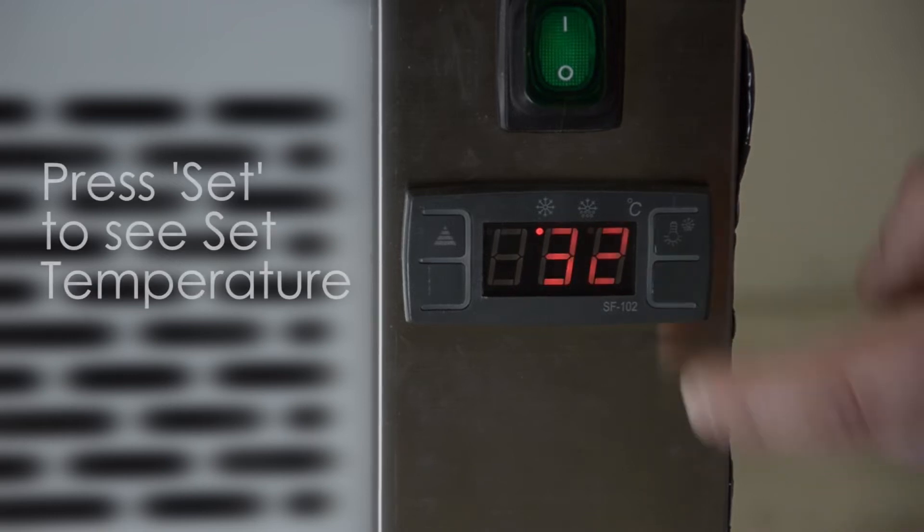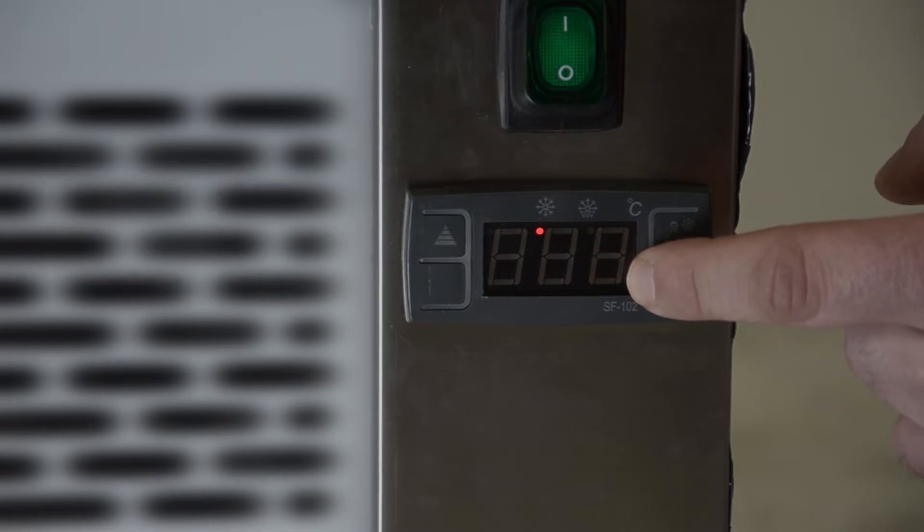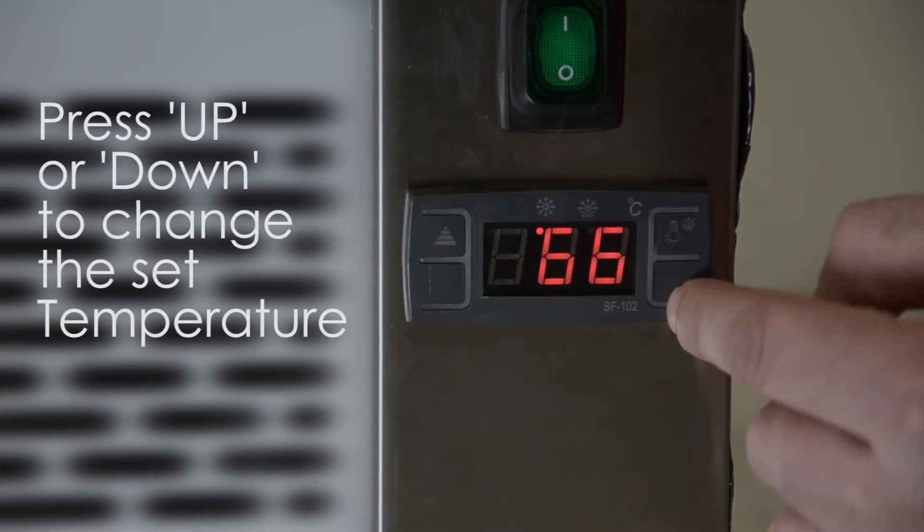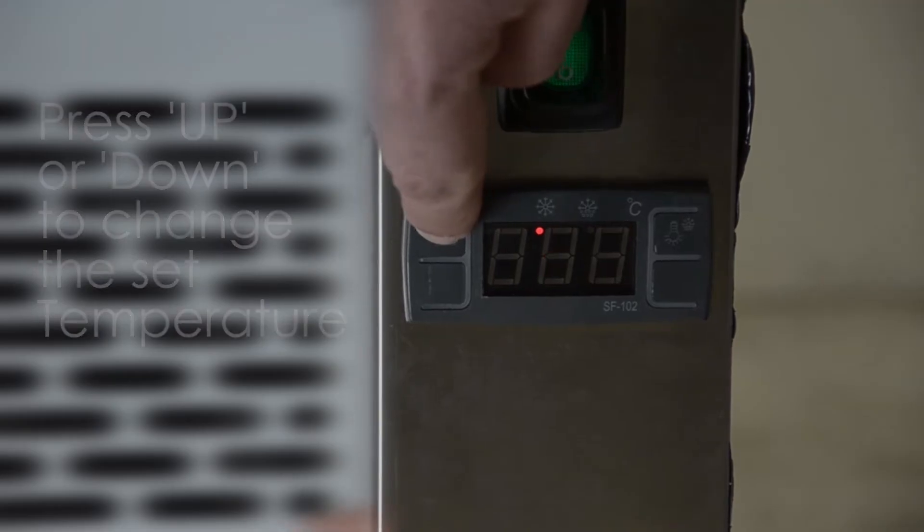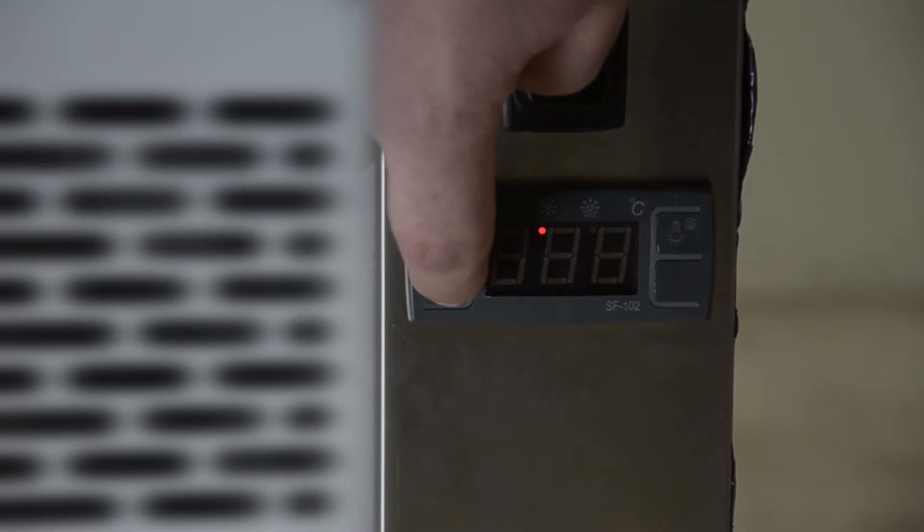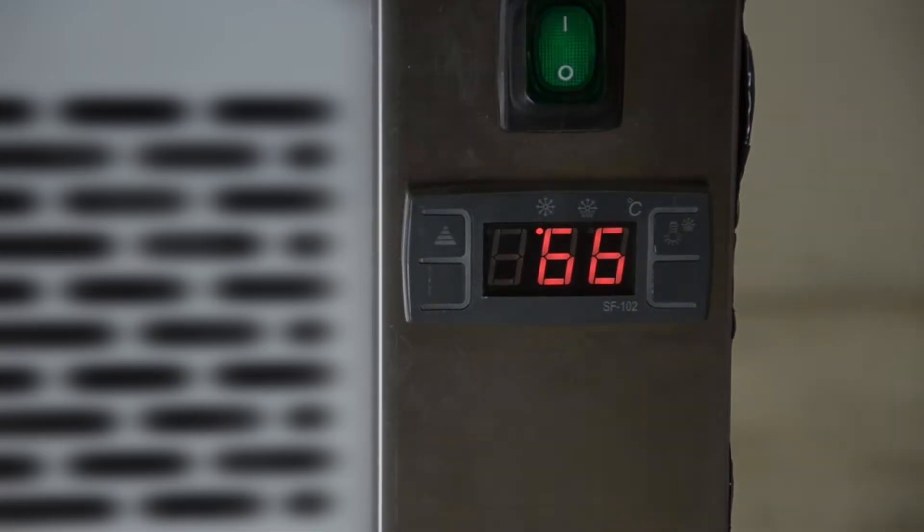To see what temperature you have set for, press the set button and it'll show you 32 degrees Fahrenheit flashing. That's what it's currently set for. If you want to increase it, press the set button, increase it by pressing the arrow up button. To decrease it, press the arrow down button, and then press set.